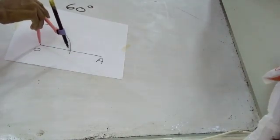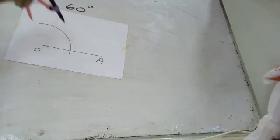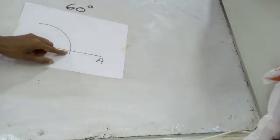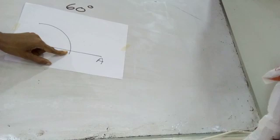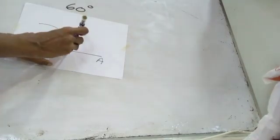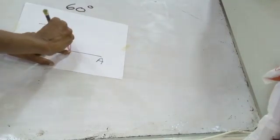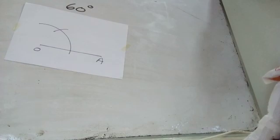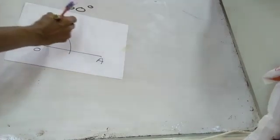Without changing the length of the radius, take this point as the center and draw another arc using the pair of compass such that it intersects the first arc. Name this point as B.